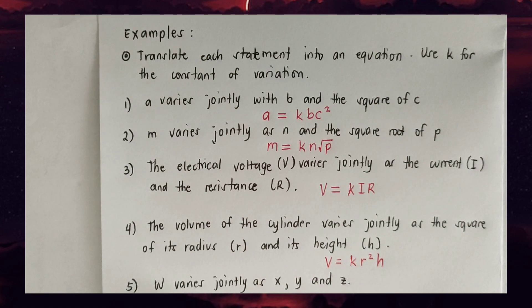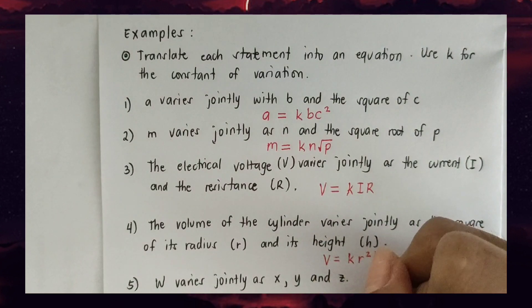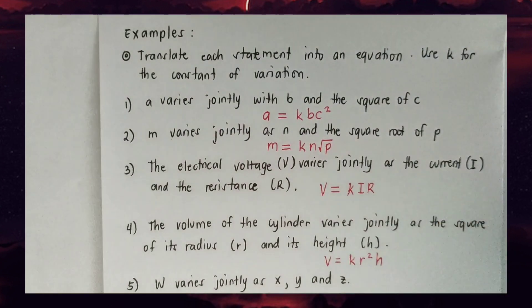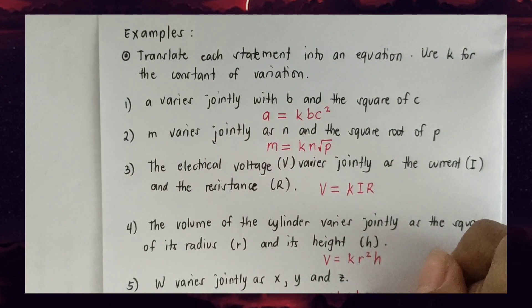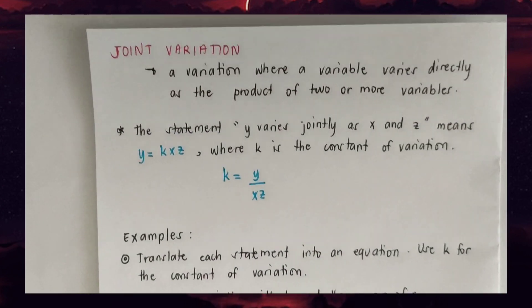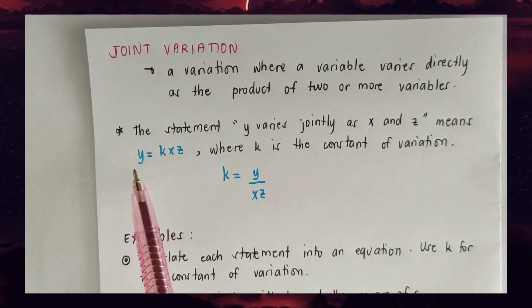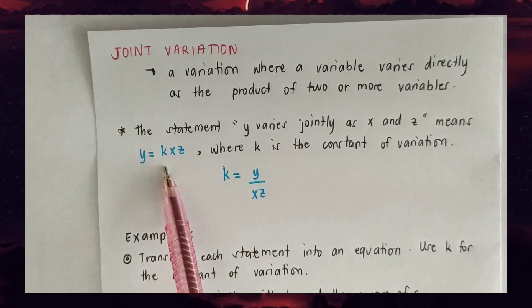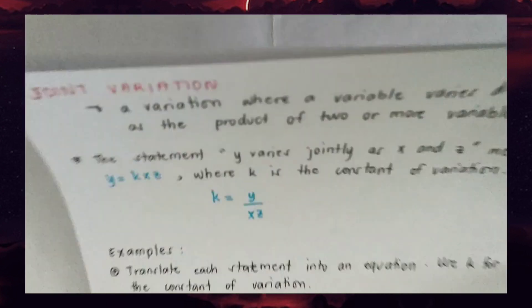Number five: 'w varies jointly as x, y, and z.' This involves the product of three variables, giving the equation w = kxyz.